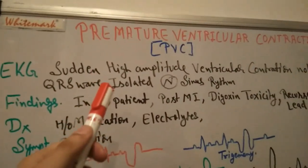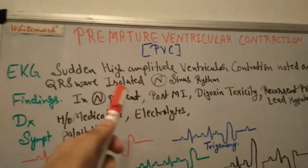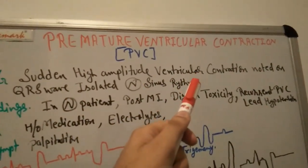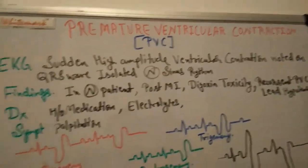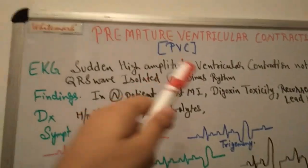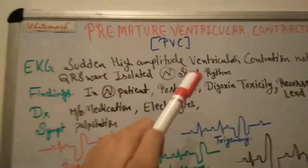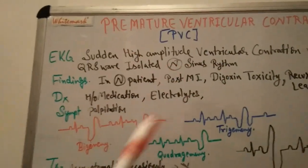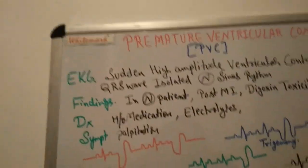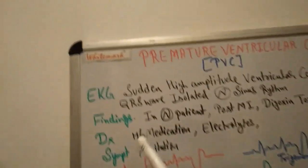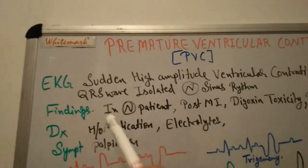The ventricles become dramatically excited due to high amplitude ventricular contraction occurring in the Purkinje fibers, or what we call the bundle of His. That is why premature ventricular beats occur.